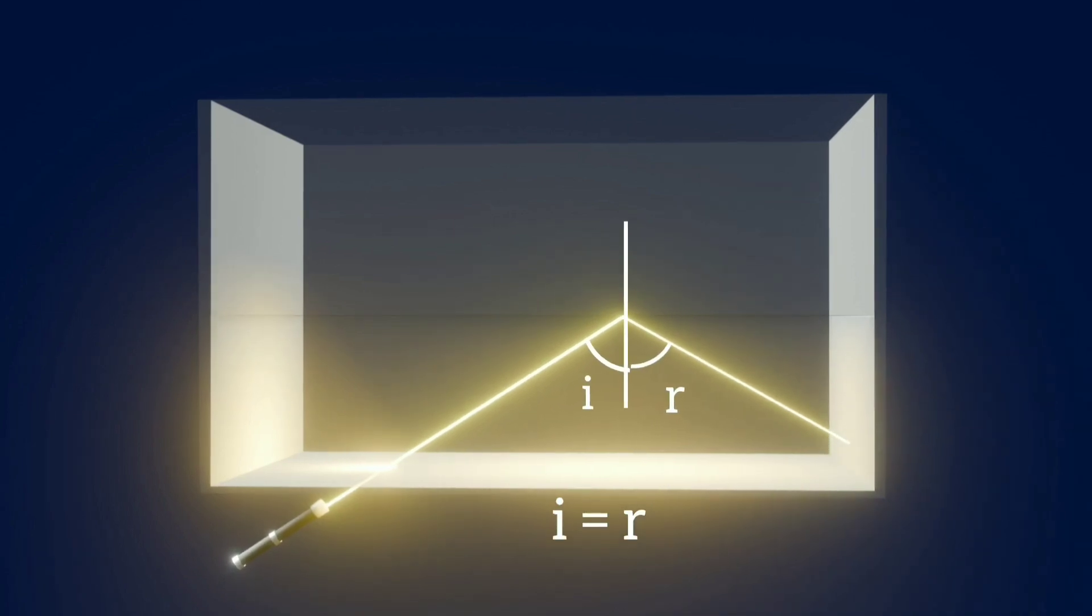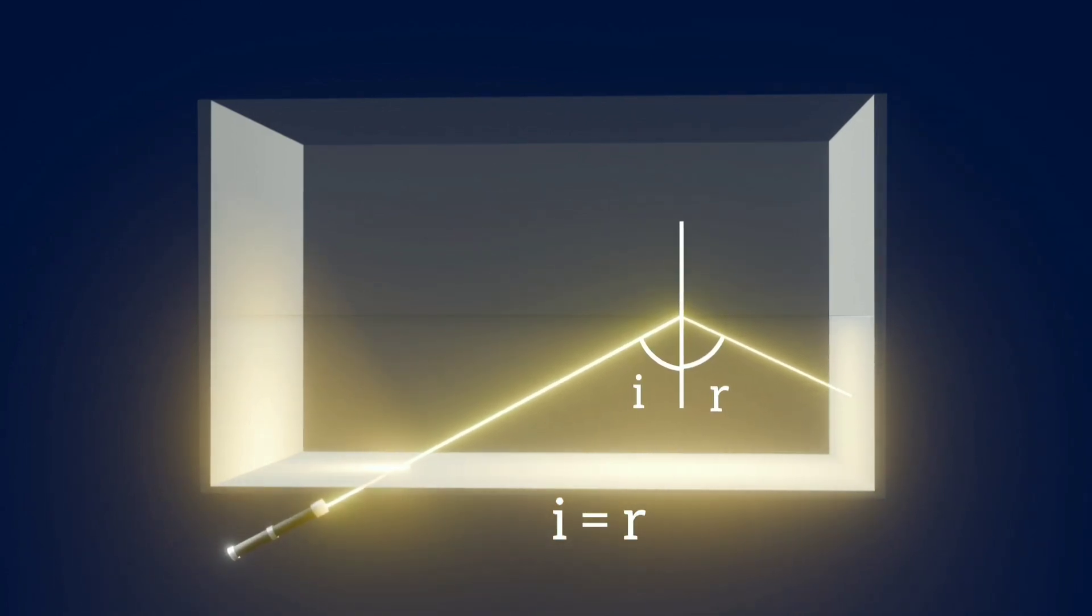Here we can see that as the angle of incidence is increased, the angle of reflection also increases. This maintains the total internal reflection and there is no refraction of light.